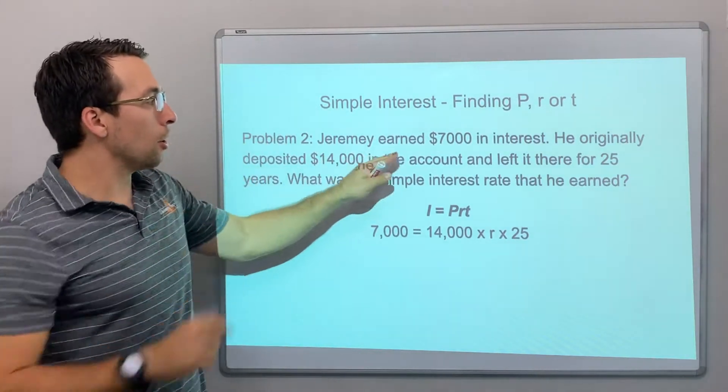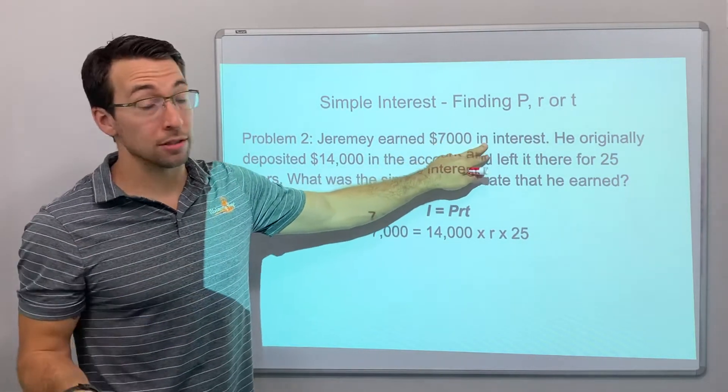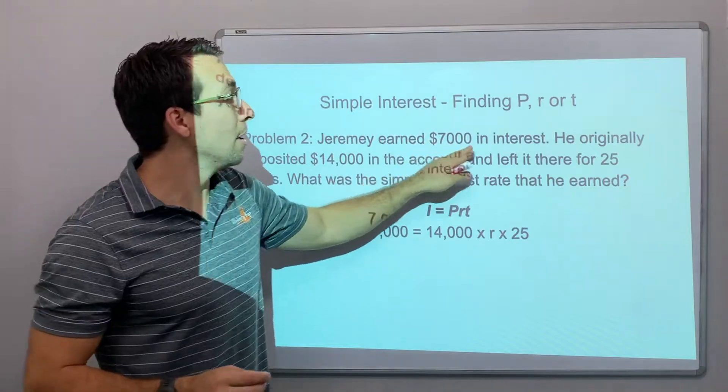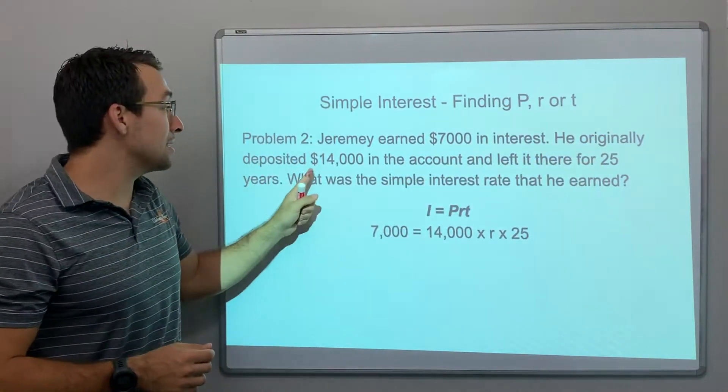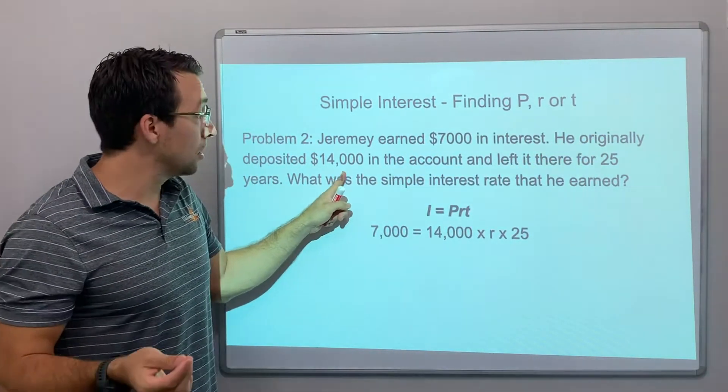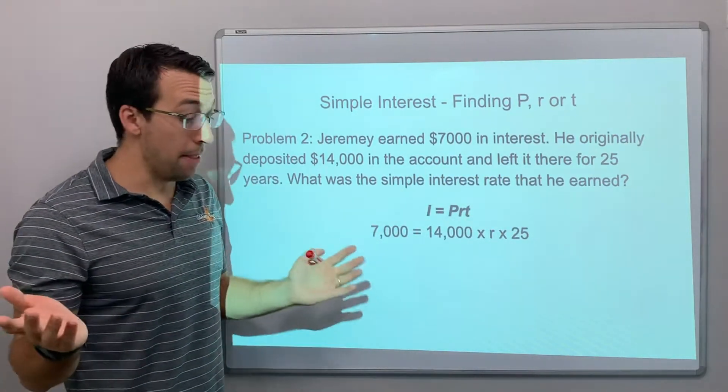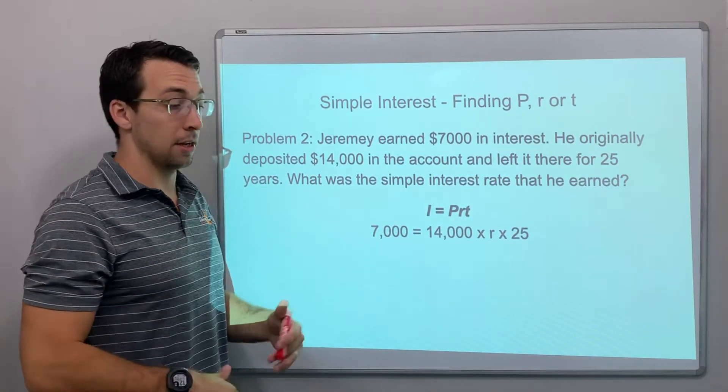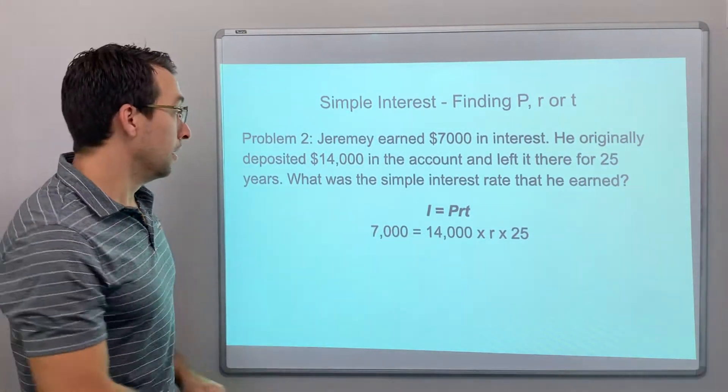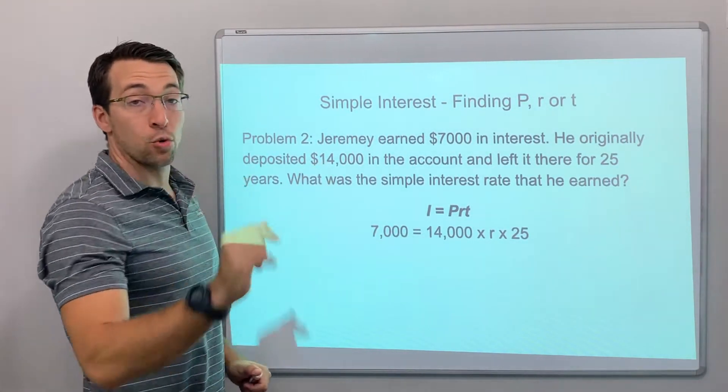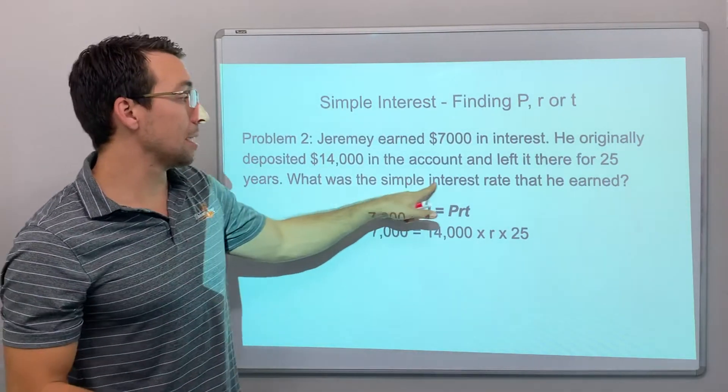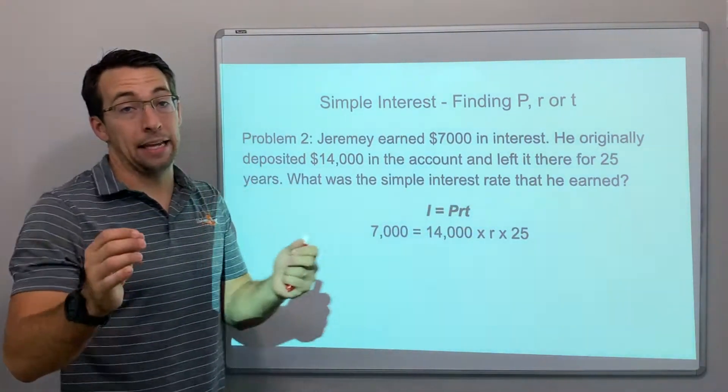So Jeremy earned $7,000 in interest, which is a lot of interest to earn. He originally deposited $14,000 in an account and left it there for 25 years. That's awesome, he was super patient, right? He just deposited the money and left it alone. So he deposited $14,000 for 25 years. What was the simple interest rate that he earned?